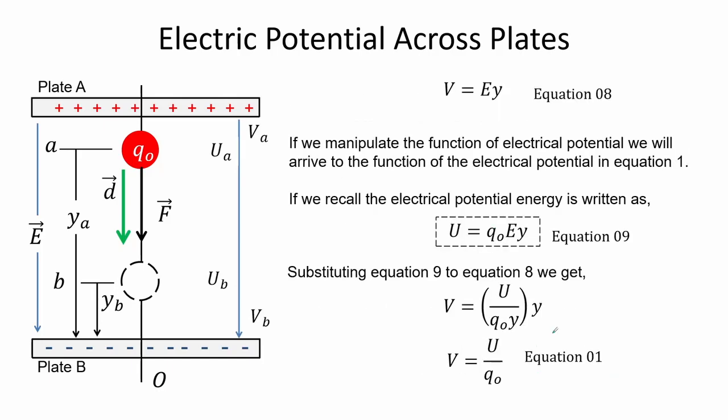If we manipulate the function for electrical potential in equation 8 we arrive at the function in equation 1. We recall the equation for electrical potential energy shown in equation 9. Substituting this into equation 8 we see that it yields equation 1, which is the function for the electrical potential energy.